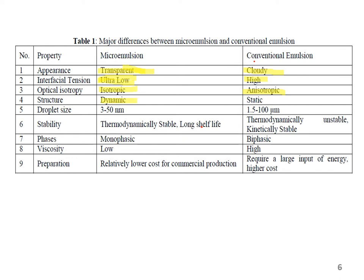The structure of the microemulsion is dynamic and you will see changes occurring in the size of the globules and the orientation of the globules in case of microemulsion, whereas in case of the conventional emulsion, the globule structure is static. Droplet sizes vary vastly and are in the range of 3 to 50 nanometers in case of microemulsion, whereas in case of conventional emulsion the size is in the range of 1 to 100 microns. Microemulsions are thermodynamically stable with a longer shelf life as compared to the conventional emulsions, which are kinetically stable but thermodynamically unstable.